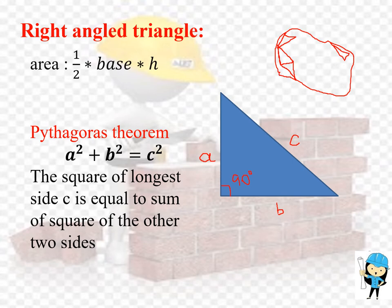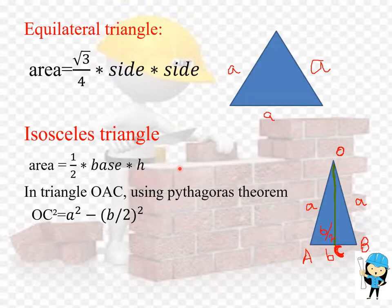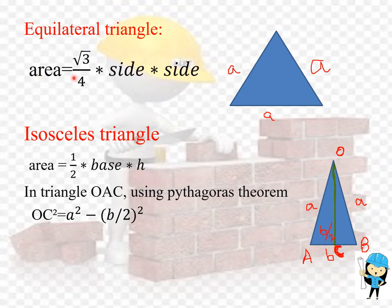Now we are going to see about the equilateral triangle. In this triangle, all three sides are equal and all three angles are equal to 60 degrees. The formula to calculate the equilateral triangle area is: root 3 by 4 into side squared. The side here is A, so the formula is root 3 by 4 into A squared.